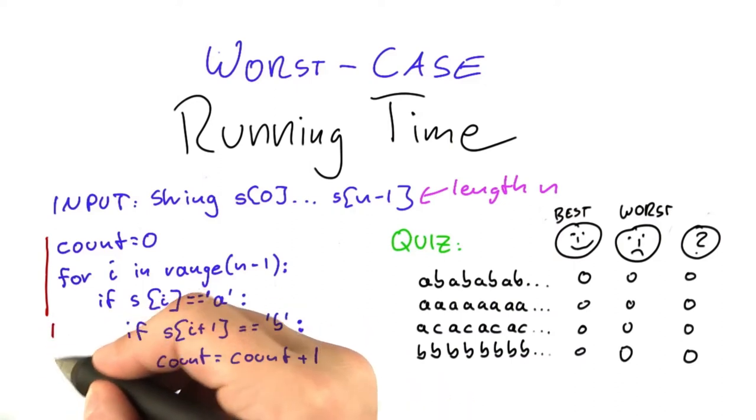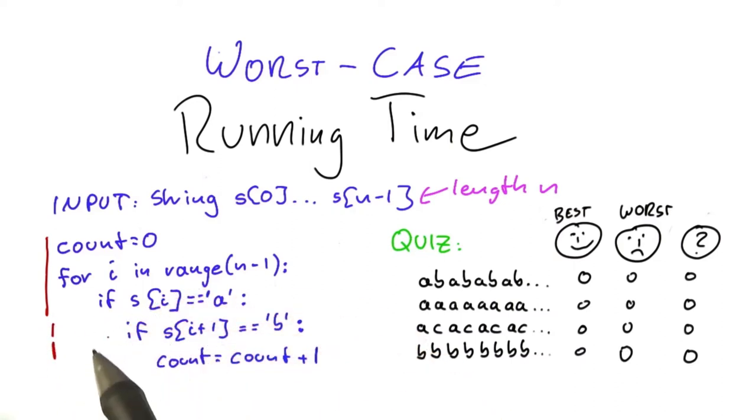But for those two parts here, that's kind of different. So this line here, which is the fourth line, will only be executed if we have encountered an A, and this line here will only be executed if we have encountered an A, then the next character is a B. So how often these two lines here are executed is dependent on the structure of the input.